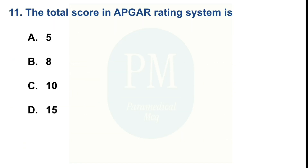The total score in the APGAR rating system is — Option A: 5. Option B: 8. Option C: 10. Option D: 15. The correct option is Option C — 10.